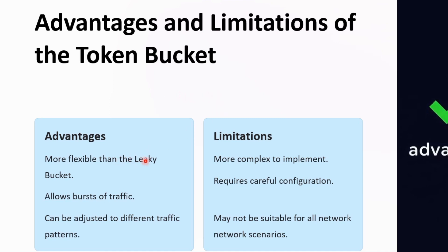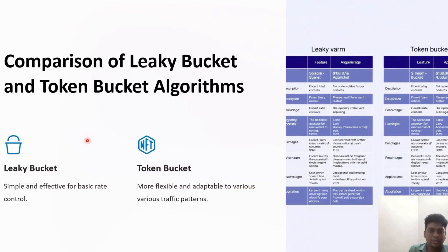The pros of the token bucket algorithm are that it is more flexible than the leaky bucket algorithm, it allows bursts of traffic, and it can be adjusted for different traffic patterns. Its limitations are that the method is somewhat more complex than the leaky bucket, careful configuration is required during implementation, and it cannot be used for all network scenarios.